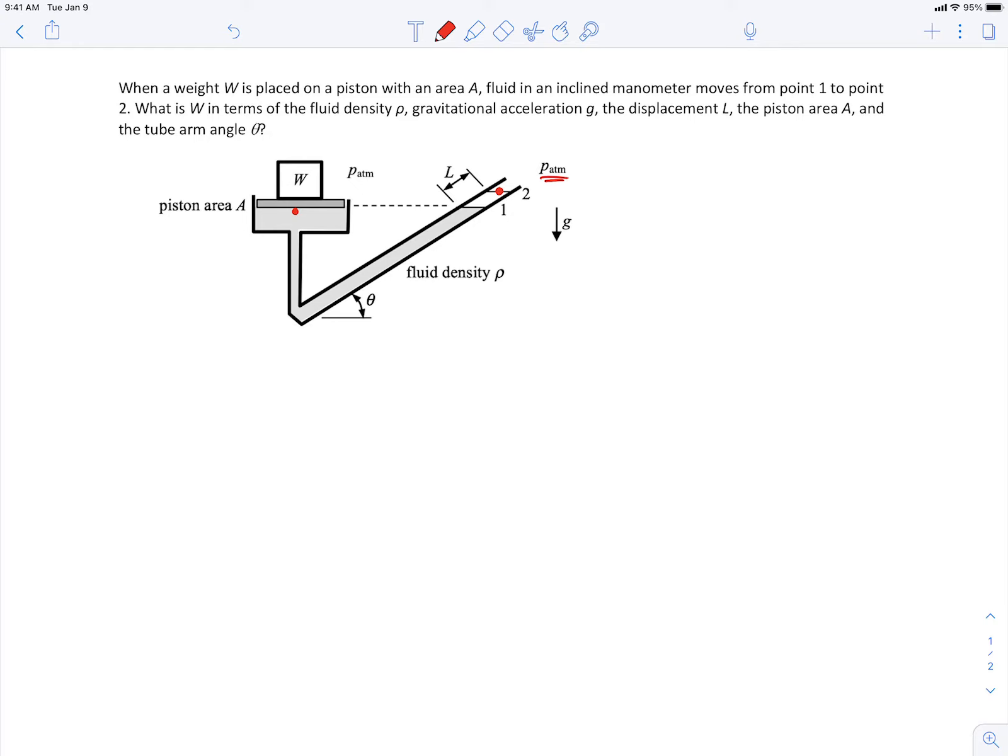Okay, so let's call the pressure here P piston. It's just right below the piston. So the pressure at this point here is just atmospheric pressure. So that's the pressure we end up with. The pressure we start with is P piston.